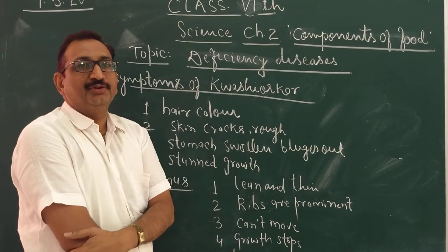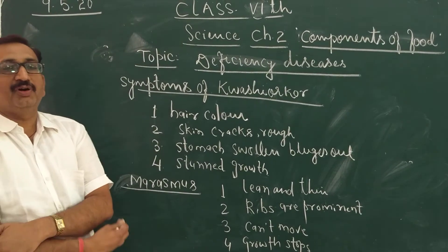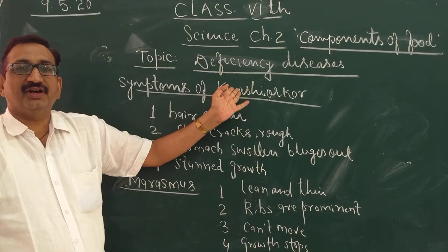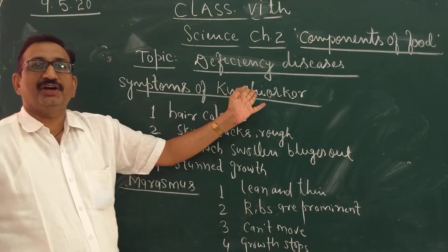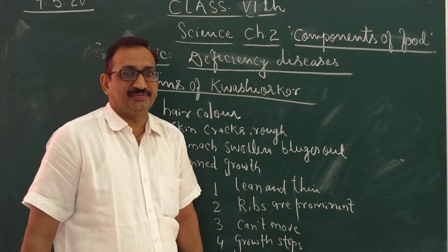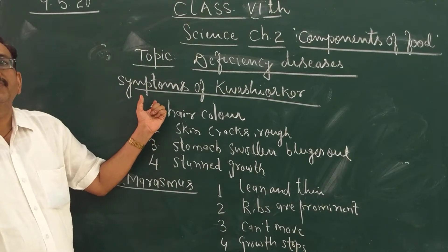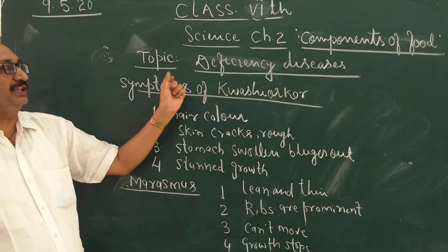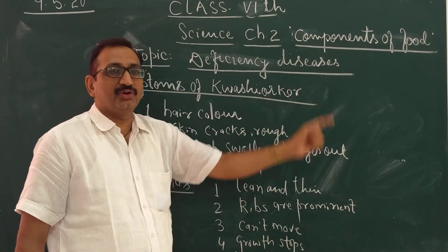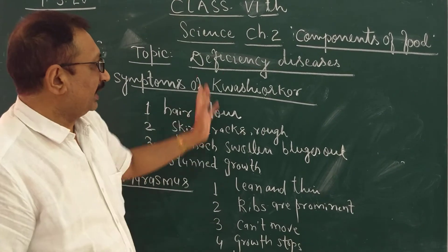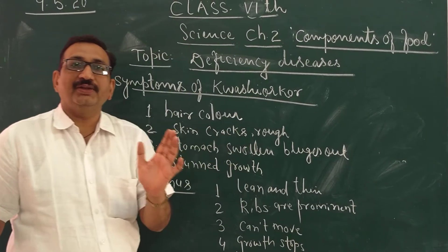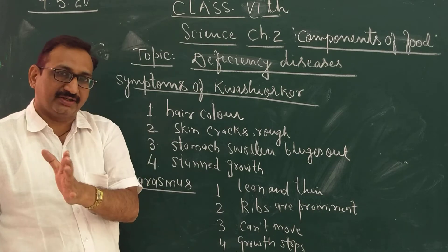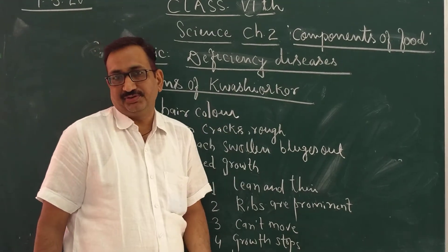So yesterday in my second video, I discussed about deficiency disease. Deficiency disease is the disease which occurs due to the deficiency of nutrients. I started with the protein deficiency disease, and yesterday our topic was about the protein deficiency disease. I told about Kwashiorkor — this disease occurs in the age group 1 to 5 years due to the lack of protein in the diet.